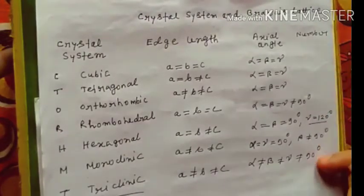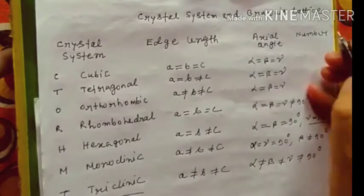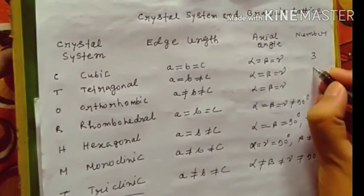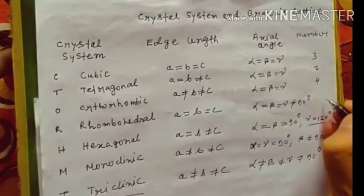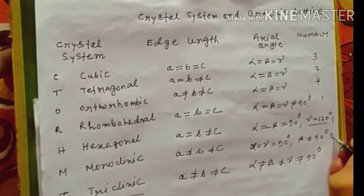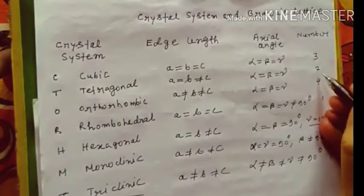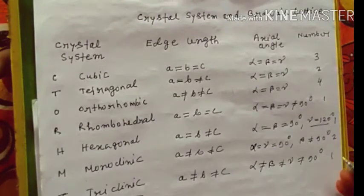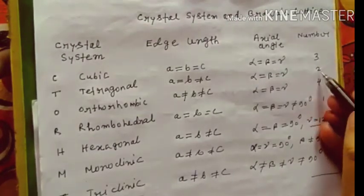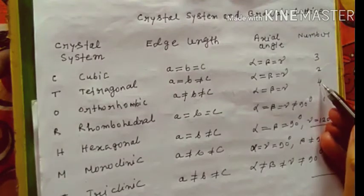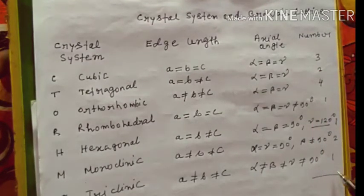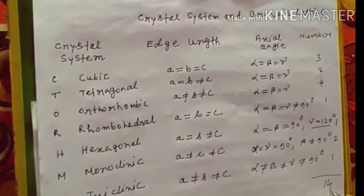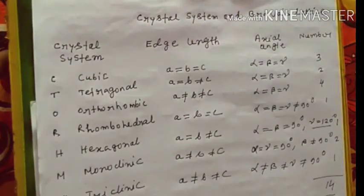And number of these crystal systems: this is 3, 2, 4, 1, 1, 2, 1. Total 14. 3 plus 2 is 5, plus 4 is 9, 10, 11, 13, and 1 is 14. So total 14 types of lattice.